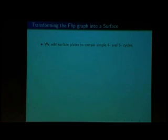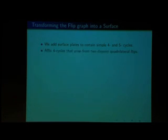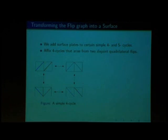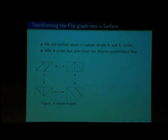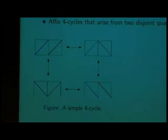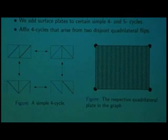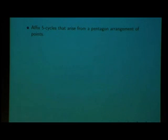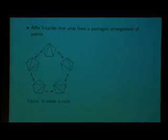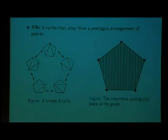Now, what's a flip complex? A flip complex is merely taking a flip graph and adding a bunch of surfaces to it. We add surfaces of simple four and five cycles. Four and five cycles are merely paths of length four and five that start at a vertex and end at that same vertex. We affix four cycles that arise from two disjoint quadrilateral flips. Consider this diagram — we have a blue edge and a red edge to flip. To get from top left to bottom right, we can flip red then blue, or blue then red. We claim this is the same thing and just redundant, so we add a quadrilateral plate. We also do this for five cycles that arise from a pentagon arrangement of points.